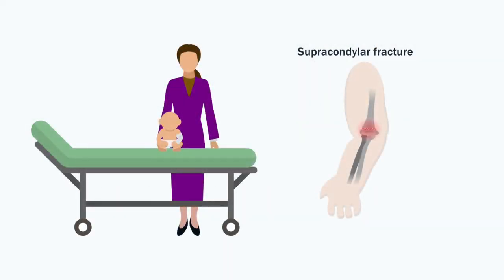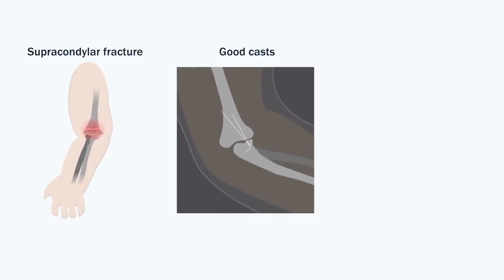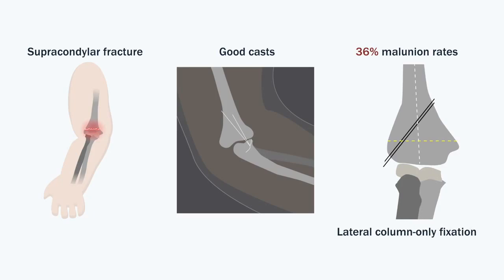Treating supracondylar humeral fractures in infantile patients is challenging. Casts must be form-fitting, and surgeons should be aware of the high rate of malunion associated with lateral column-only fixation.